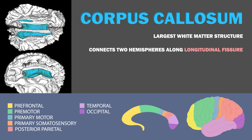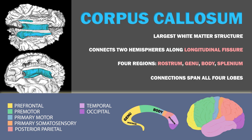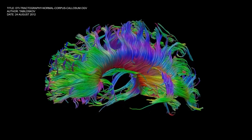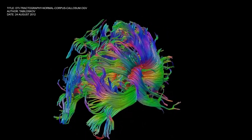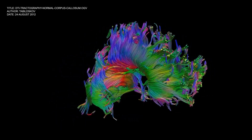The corpus callosum can be divided into four regions: the splenium at the posterior, the body in the middle, the genu at the anterior, and the rostrum curving back under the genu. The cortical connections created by the corpus callosum span all four lobes. Using diffusion tensor imaging tractography, we can see how the fibers of the corpus callosum extend, radiating in mostly an upwards direction.